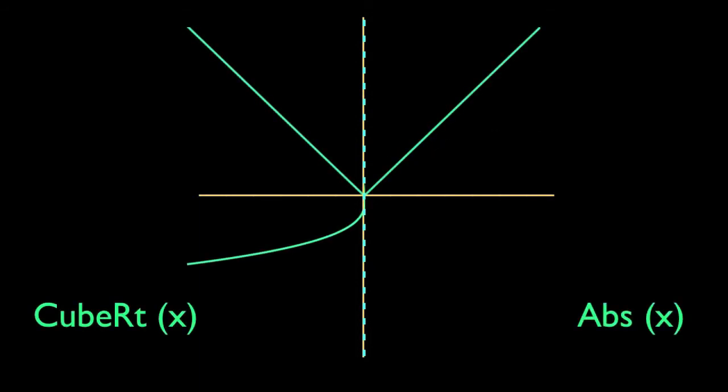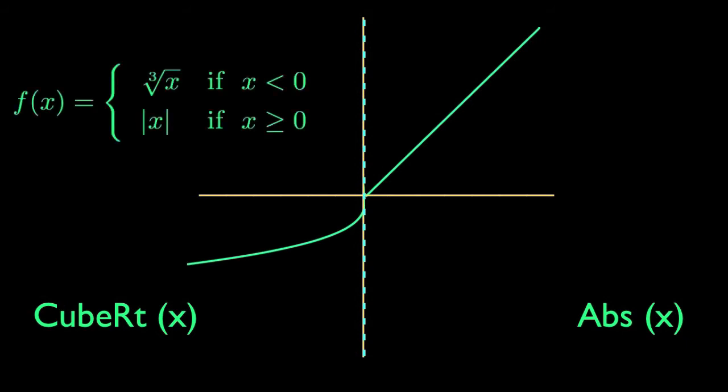To form this piecewise function, restrict the cube root function to the left-hand plane, and the absolute value function to the right-half plane. Together, these two restricted functions make up one function, defined in pieces, or a piecewise function.